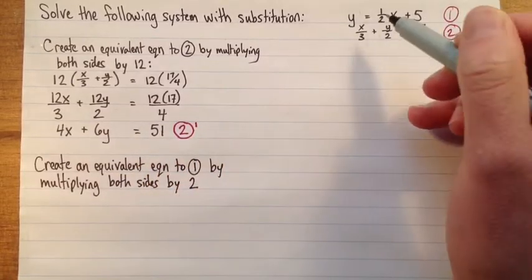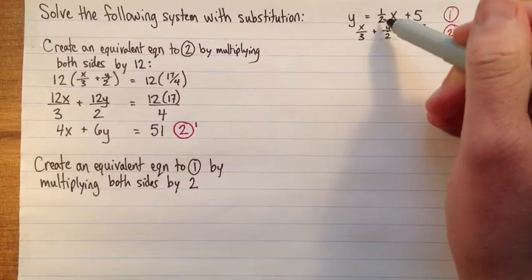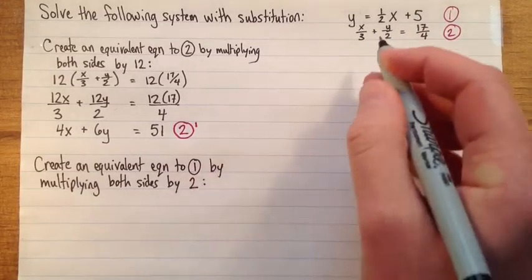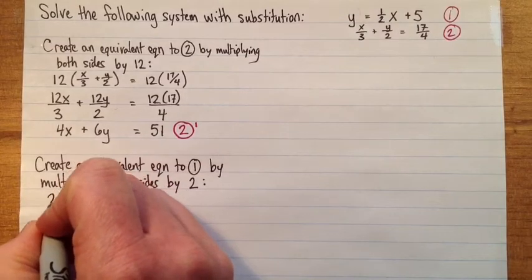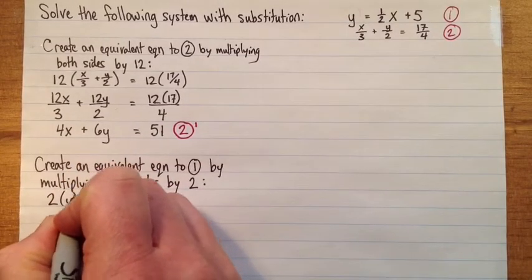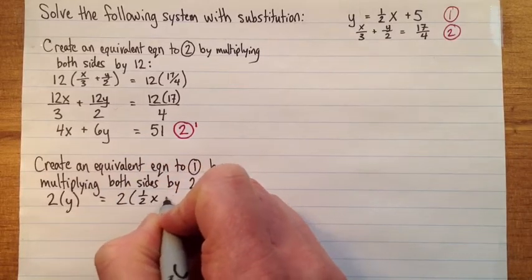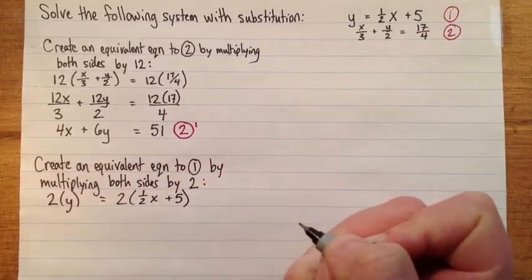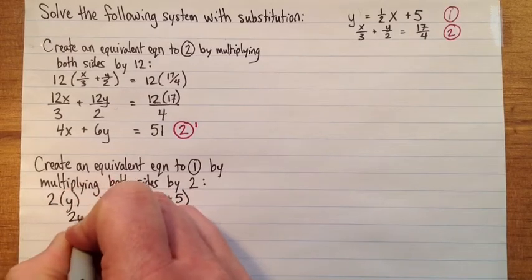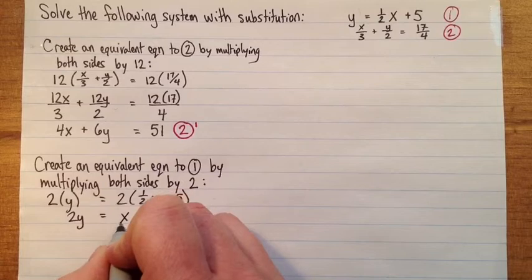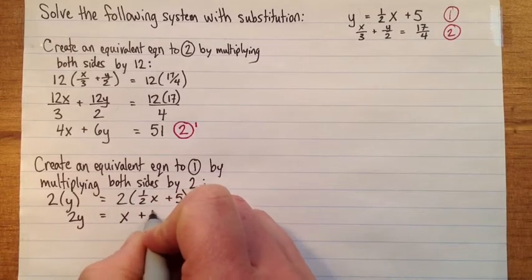So if you only have one denominator, the lowest common denominator is just that number. So you just multiply by the denominator. So I've got 2 times y equals 2 times one half x plus 5. So that's 2y equals 2 times one half x is x. 2 times 5 is 10.